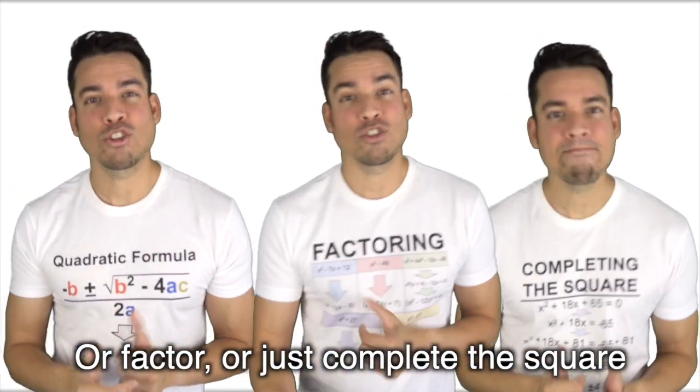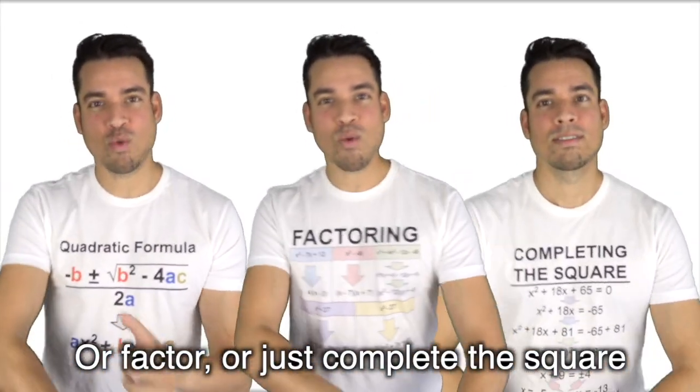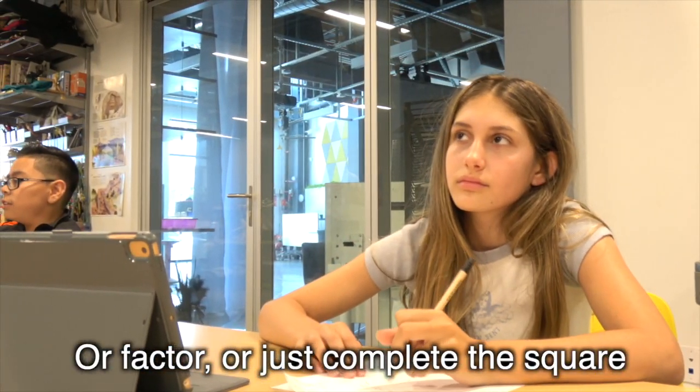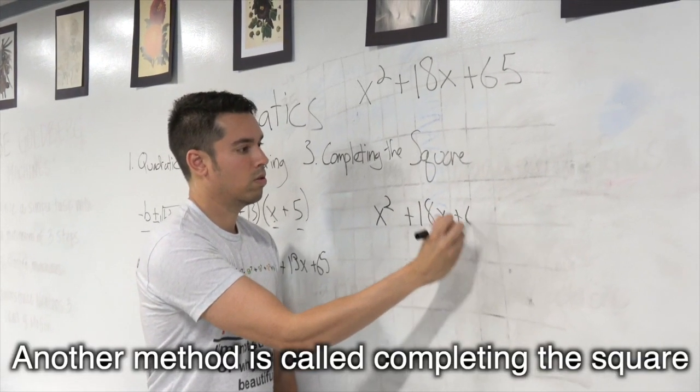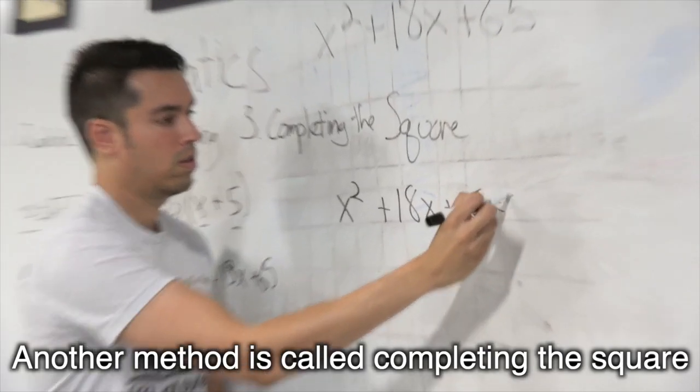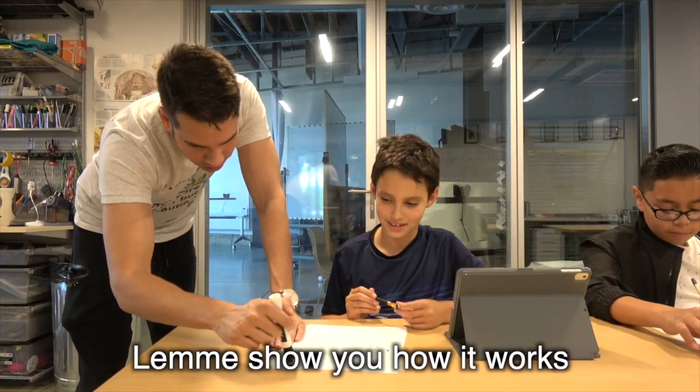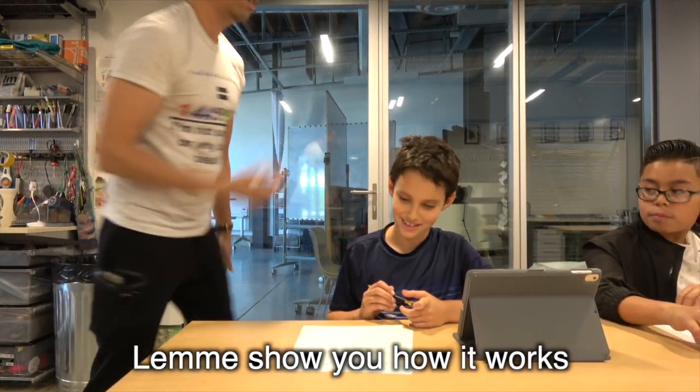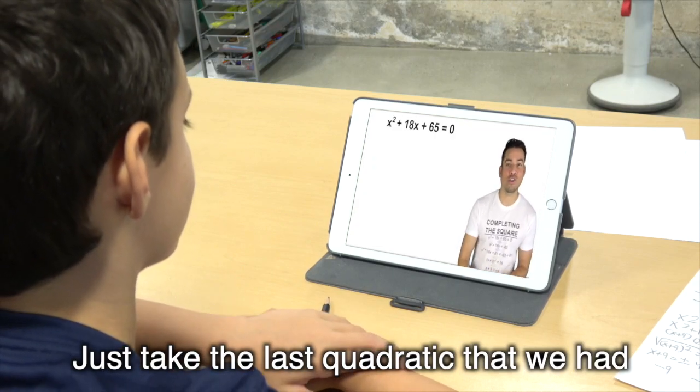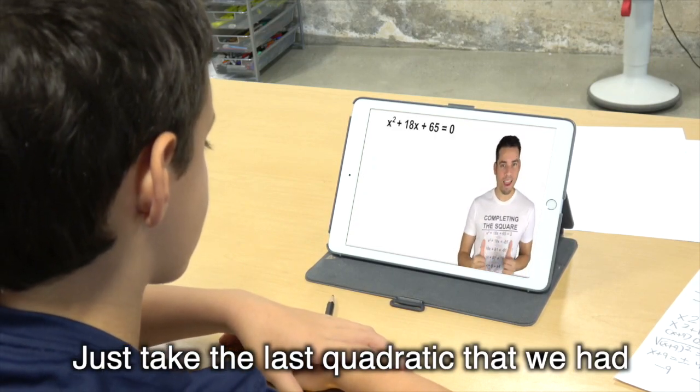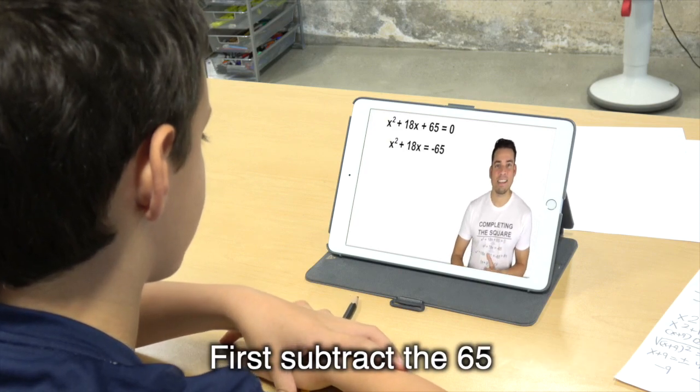Another method is called completing the square. Let me show you how it works. Let's take the last quadratic that we had. First, subtract the 65.